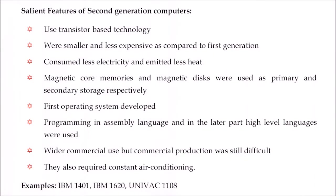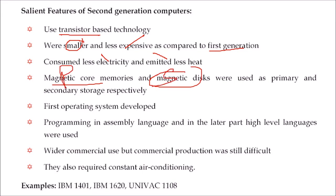Salient features of the second generation: transistor-based technology, smaller and less expensive compared to the first generation, less electricity, less heat, magnetic core memories as primary memory and magnetic disks as secondary memory. The first operating systems were developed, and programming was done in assembly language with high-level languages used in the later part. Commercial applications started, but production was still quite difficult and required constant air conditioning.